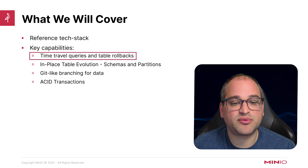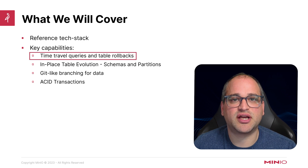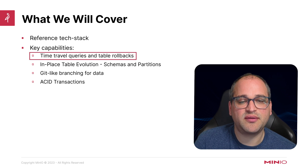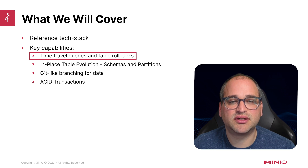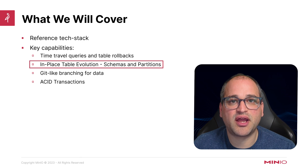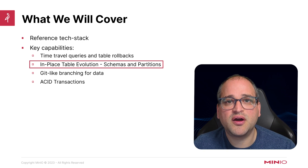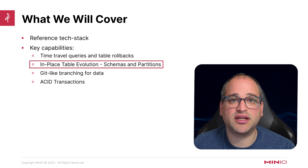The first capability is time travel queries — the ability to easily query your data not just as it looks today, but as it may have looked at any arbitrary point in the past. We're then going to dive into in-place table evolution: the ability to modify things like schemas and partitions in a very performant way, without making any additional copies of the data in your data lake.